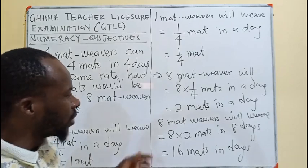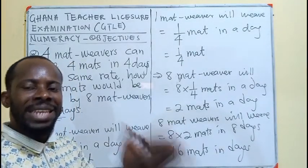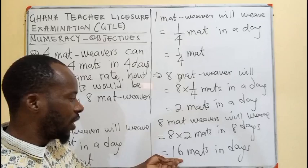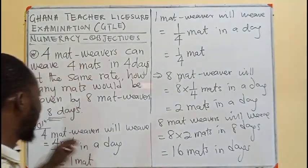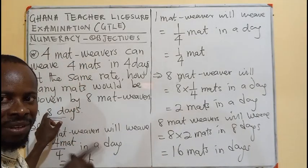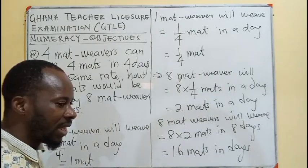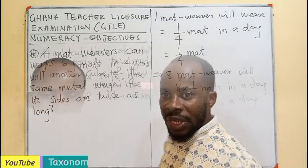So, this is going to be 16 mats in eight days. I believe you follow the concept, using the unitary method to arrive at the answer. So, it's going to be 16, not the eight as we said in the beginning. So, this will be our answer.